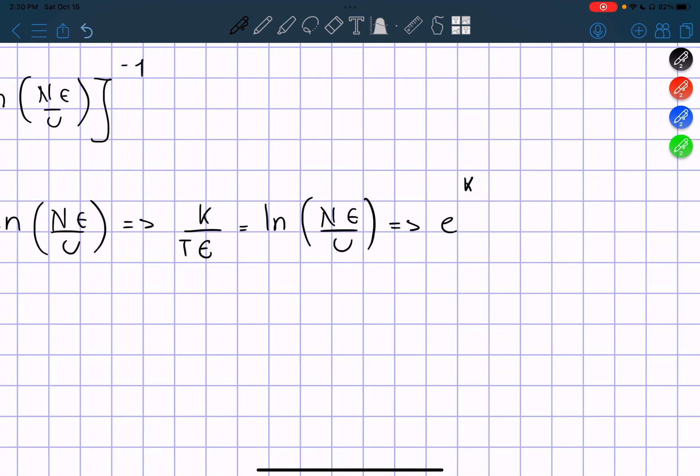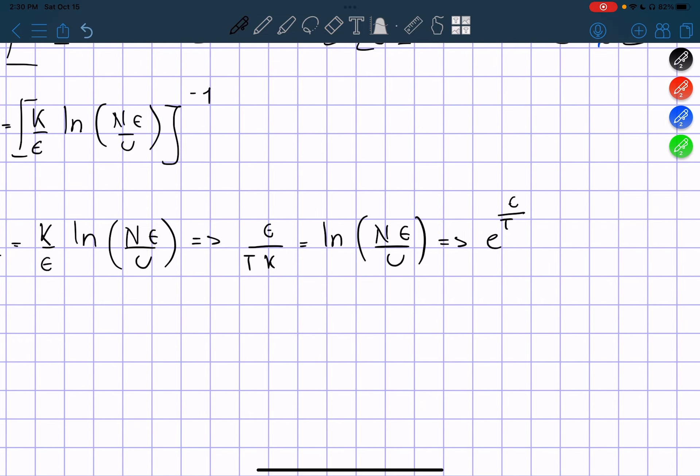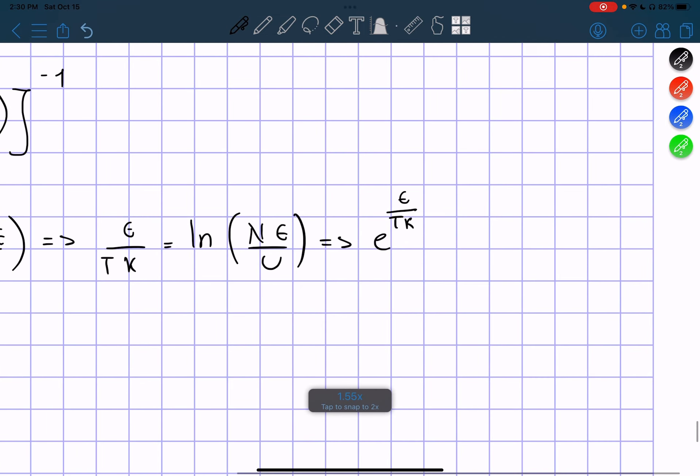So E to the power of K divided by T times the constant, oh, no, that's all right. I'm getting confused. These two switch out. And then the other side just get to the ln. So N is the constant divided by U.